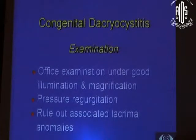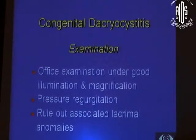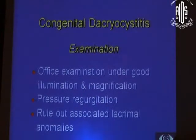Presence of pressure regurgitation establishes the diagnosis of congenital nasolacrimal obstruction (CNLO). If the child has regurgitation-positive and obviously nothing else, that is congenital nasolacrimal obstruction. You also have to rule out associated lacrimal anomalies such as fistula.